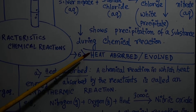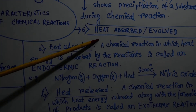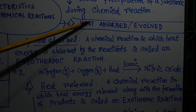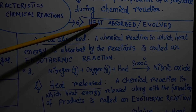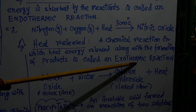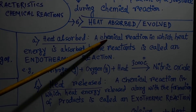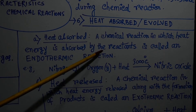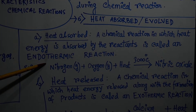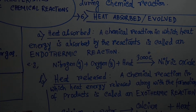The next characteristic of chemical reactions is the change of heat energy — either absorbed or evolved. Almost all chemical reactions take place with the absorption or evolution of energy in the form of heat. Depending on whether heat energy is absorbed or evolved, chemical reactions are generally of two types: number one, endothermic reactions, and number two, exothermic reactions. A chemical reaction in which heat energy is absorbed by the reactants is called an endothermic reaction. An endothermic reaction causes a fall in temperature.